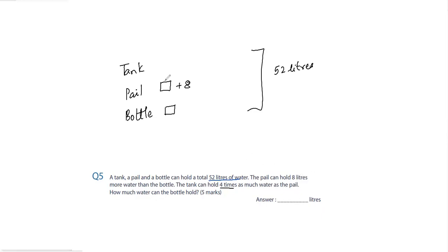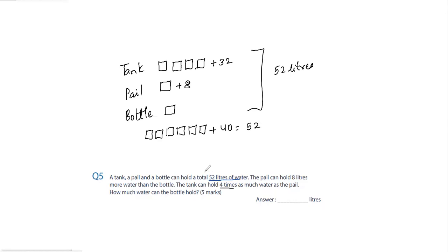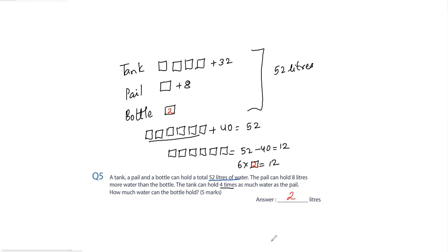The tank holds four boxes of the bottle's amount, plus 4 times 8 which is 32. So the total is: 6 boxes plus 32 plus 8 equals 52 liters. That means 6 boxes equals 52 minus 40, which is 12. So each box equals 2, meaning the bottle can hold 2 liters of water.